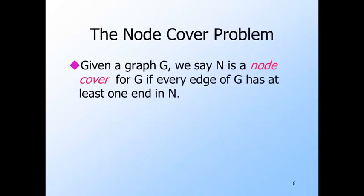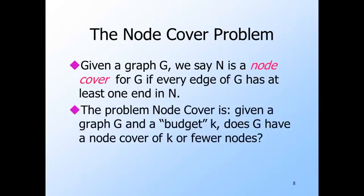Now let's meet a real problem from operations research that Karp proved to be NP-complete. A node cover for a graph is a set of nodes such that every edge has at least one of its two nodes in the set. We need to express the problem of finding a smallest possible node cover as a yes/no problem. We do so by asking whether, given a graph G and an integer K, does G have a node cover of size K or less? This is the formal problem called node cover.